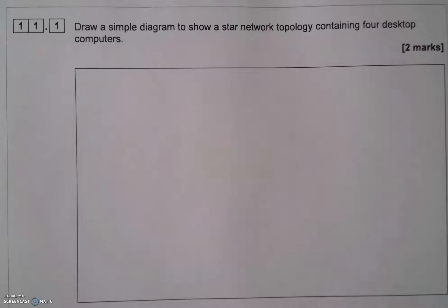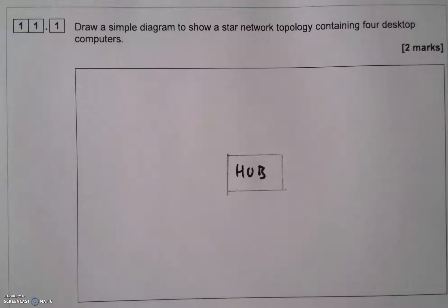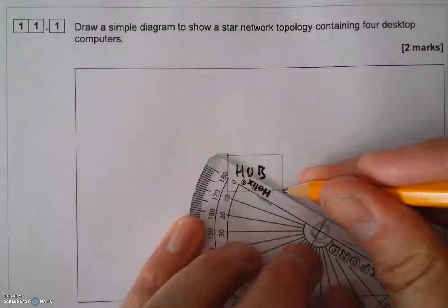What I need to do is start with drawing the hub in the middle of the rectangle. I've used a pencil and a ruler for the drawing and I've labeled it hub. Now what I need to do is draw the lines that connect to the desktop computers.